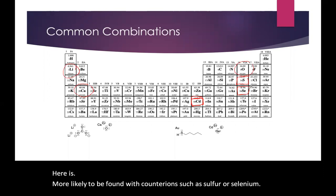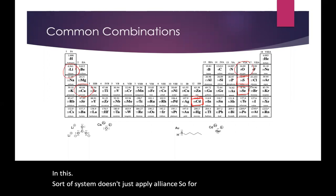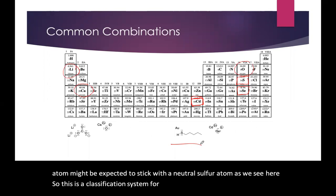And this sort of system doesn't just apply to ions. So for instance, a neutral gold atom might be expected to stick with a neutral sulfur atom as we see here. So this is a classification system for ionic compounds but also other sorts of Lewis acid-base interactions.